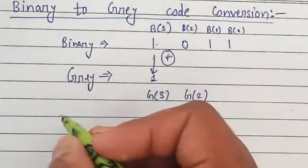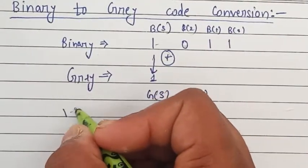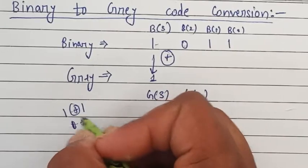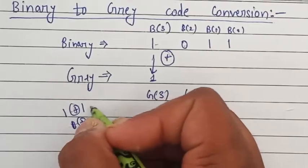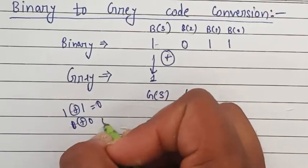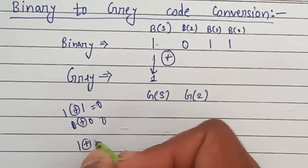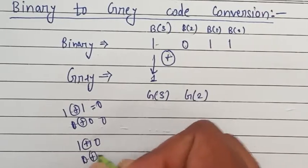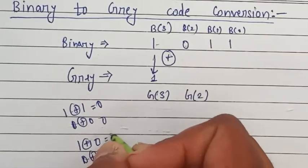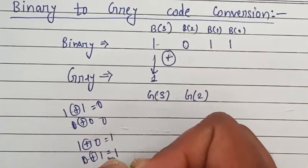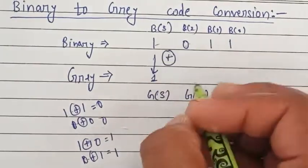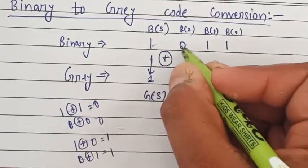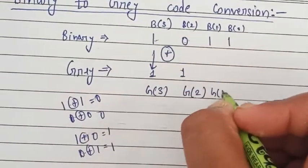For XOR: if both numbers are the same, it will always give you 0. If the numbers are opposite — like 1 and 0, or 0 XOR 1 — it will always give you 1. So if you XOR 1 and 0 you will get 1.